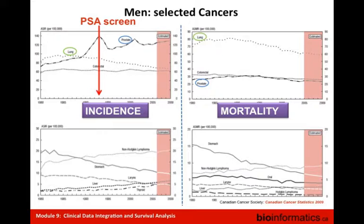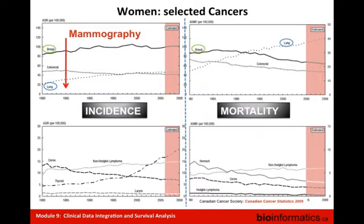Lung cancer is another example — both incidence and mortality rates are going down over the last couple of decades, most likely attributed to recognition of risk factors such as smoking, which influenced awareness within the male population. For women, the introduction of mammography was a milestone for breast cancer management, providing means to detect cancers at earlier stage, which is far more curable. The mortality rate went down a little, but breast cancer is not eradicated — we still lack biomarkers that distinguish aggressive from indolent disease.